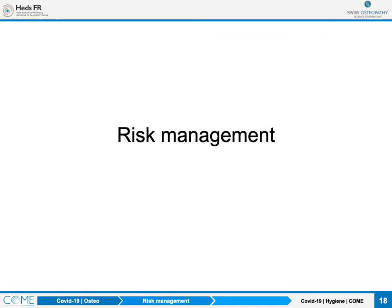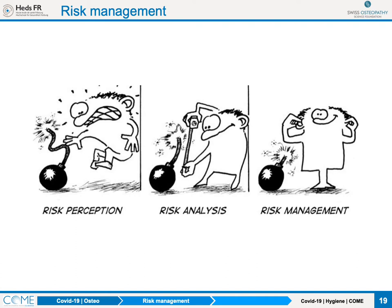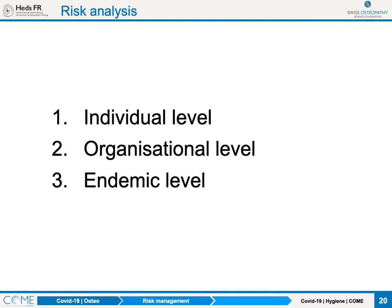What is risk management? There are three levels to consider for the risk of coronavirus transmission. The first is the individual level — person to person and the risks related to people. The second is the organisational level — the structure and organisation of your office, how people might cross each other and what they touch. The third is the endemic level — what proportion of the population is affected by the virus and therefore what the overall risk of contamination is.